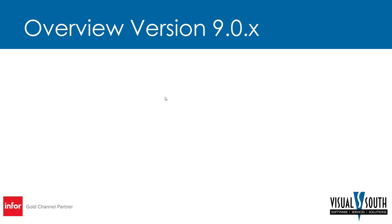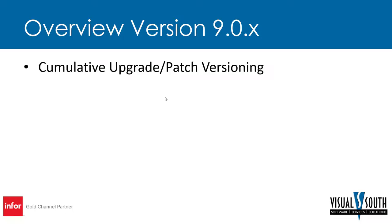Looking at version 9.0.x, this is where the cumulative upgrade patch versioning came out. No longer do you have to patch individual executables and SQL scripts separately. It all comes as a single executable file that updates the entire patch and everything in it — all patched executables run at once and SQL scripts run for you automatically. It's a very easy patching system now. The patch updates are rather small but can still add functionality enhancements, so you're not just waiting for one big upgrade at the end of the year.